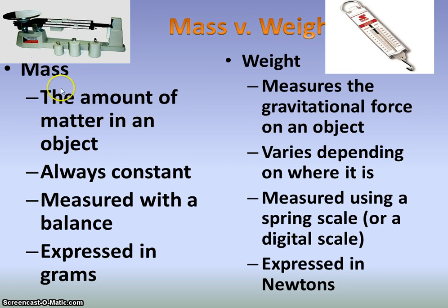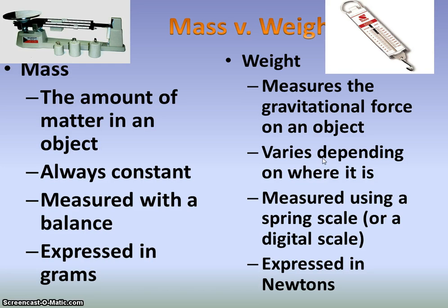Mass, once again, is measured with a triple beam balance. It's the amount of stuff that is there — it stays the same and does not change. We express mass in grams. Weight, however, you can measure with a scale, such as a spring scale we often use in science. Weight measures the gravitational force, which depends on where an object is — different places have different gravitational forces — so weight varies and changes. We talk about weight in the units of newtons, which is a unit that measures force.